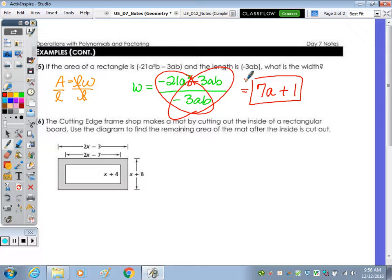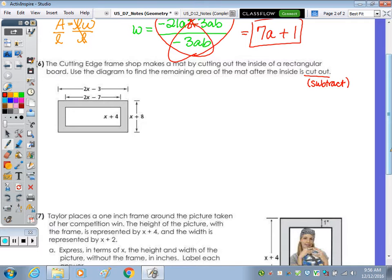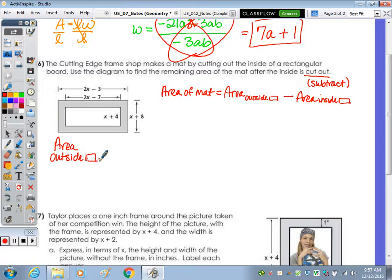Number 6. The cutting edge frame shop makes a mat by cutting out the inside of a rectangular board. Use the diagram to find the remaining area of the mat after the inside is cut out. Cut out means we're going to subtract. The total shaded area, the area of the mat, is equal to the area of the larger rectangle or the outside one, minus the area of the smaller one or inside rectangle. Off to the side over here, I'm going to find the area of the outside and the area of the inside.